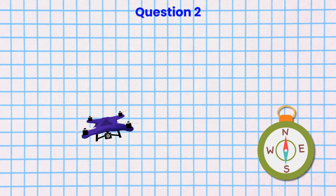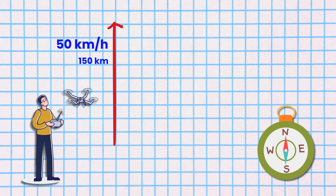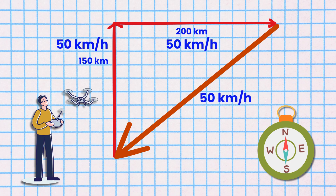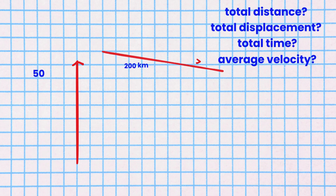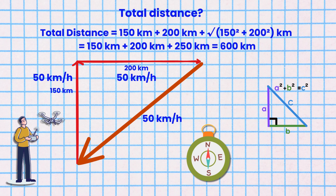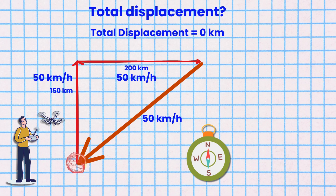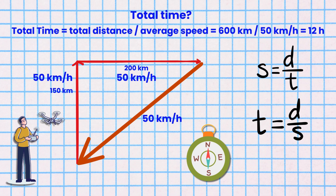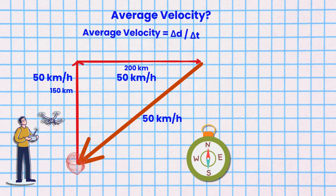Question 2. A drone flies 150 kilometers north at a constant velocity of 50 kilometers per hour, then flies 200 kilometers east at 50 kilometers per hour, and finally returns to its starting point along a straight path at 50 kilometers per hour. Calculate the drone's total distance, total displacement, total time, and average velocity. Total distance is 150 kilometers plus 200 kilometers plus the square root of 150 squared plus 200 squared, and that equals 600 kilometers. Total displacement is 0 kilometers because the drone returns to its starting point. Total time is total distance divided by the average speed: 600 kilometers divided by 50 kilometers per hour, which equals 12 hours. Average velocity is total displacement divided by the time interval, which equals 0 kilometers per hour.